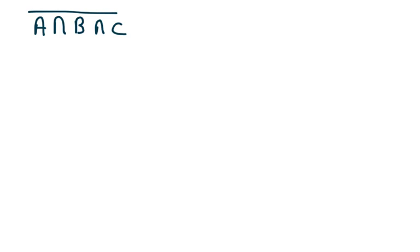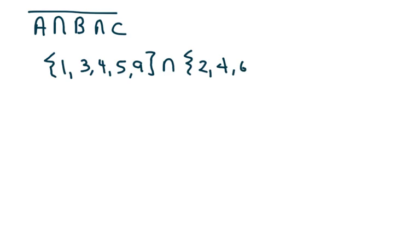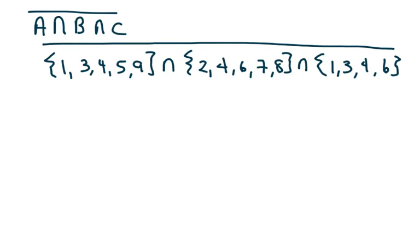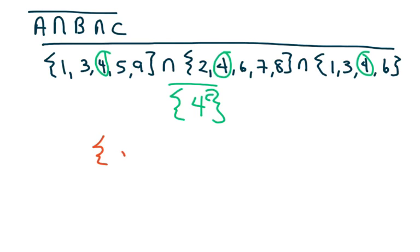And now the opposite: A intersect B intersect C, then the complement of that whole thing. The only element common to all three sets is 4, so A∩B∩C = {4}. Then I take the complement — I look at my universal set and write down everything but 4, skipping the four.